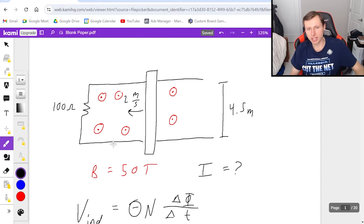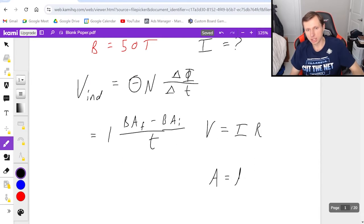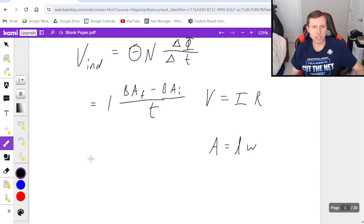since this shape is a rectangle, and area equals length times width, then what we can say is that the induced voltage is, I'm just going to ignore the one, magnetic field times length times width final minus B times length times width initial divided by the time.